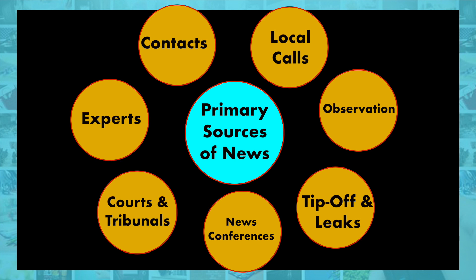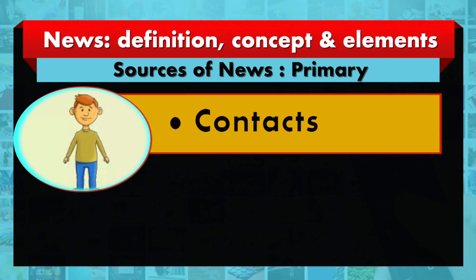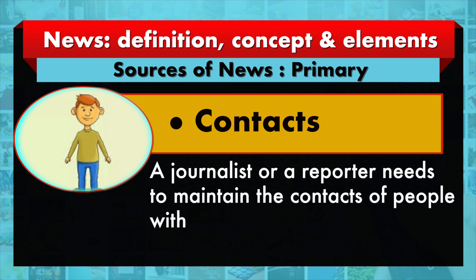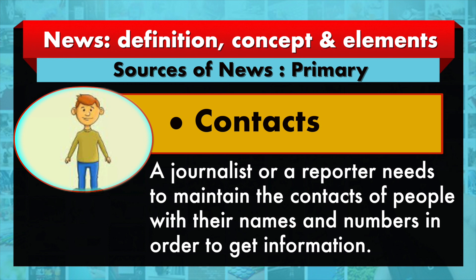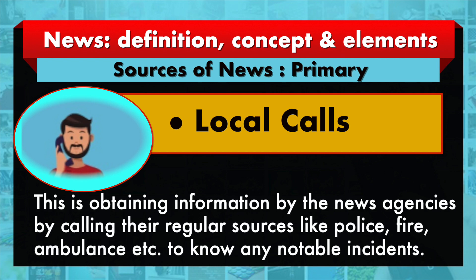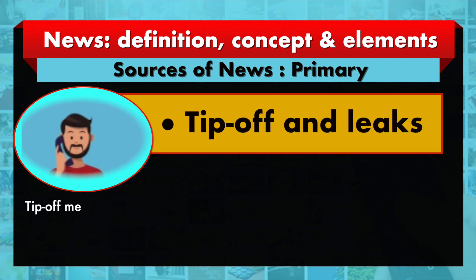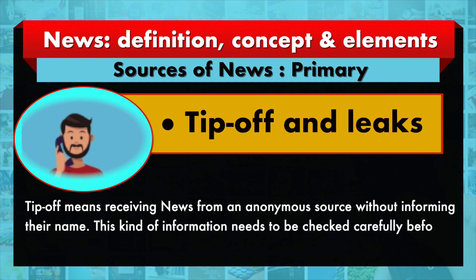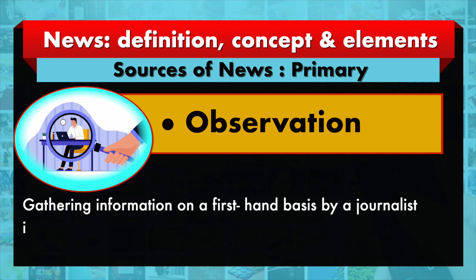There are various primary sources. First, contacts — a journalist or reporter needs to maintain contacts of people with their names and numbers in order to get information. Second, local calls — obtaining information by news agencies by calling their regular sources like police, fire, and ambulance to know of any notable incidents. Third, tip-offs and leaks — a tip-off means receiving news from an anonymous source without informing their name; this kind of information needs to be checked carefully before going to print or broadcast.